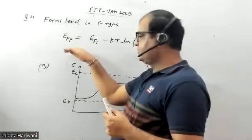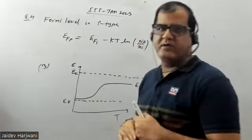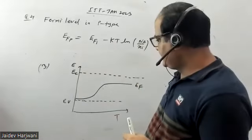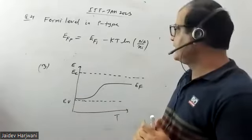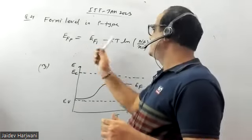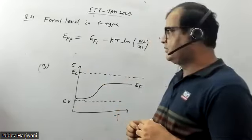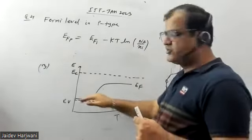We know that the Fermi level of a p-type semiconductor is close to the valence band. Now what happens when you increase the temperature? Let us see the effect of temperature on the position of the Fermi level.